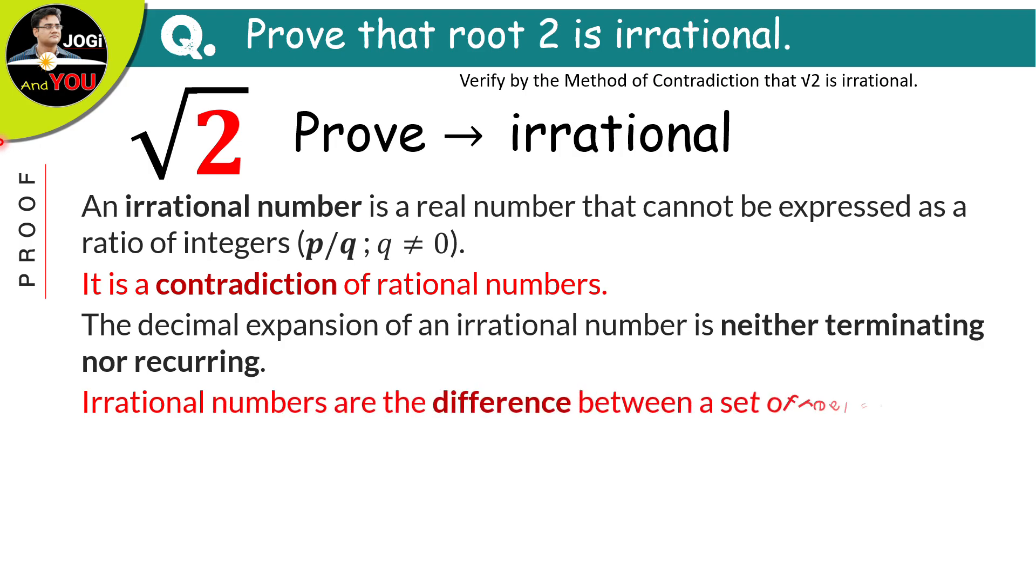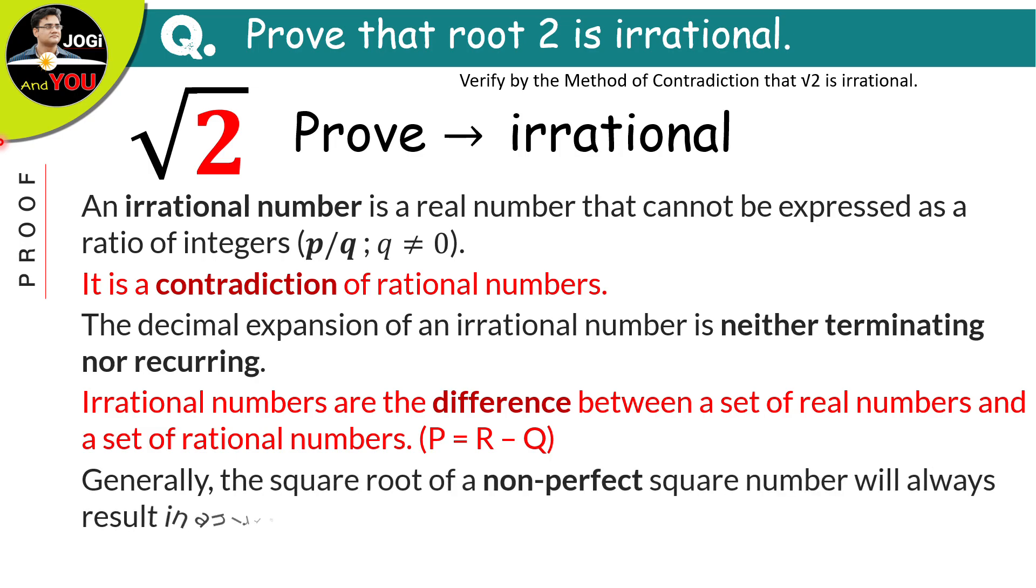Irrational numbers are the difference between a set of real numbers and a set of rational numbers. Next, generally the square root of a non-perfect square number will always result in an irrational number.